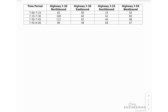Here we can calculate the hourly volume by making the summation of all values to find our hourly value. So 82 plus 108 plus 112 plus 89 gives me an hourly value of 391 for highway I-20. Doing the summation for the other locations, I get 220, 189, and 337.